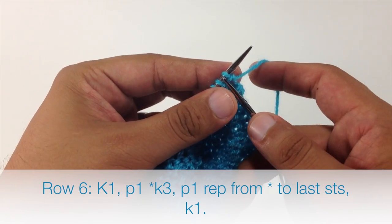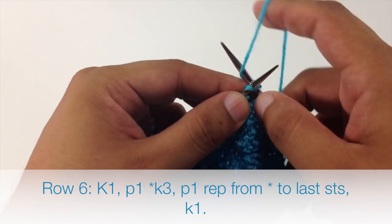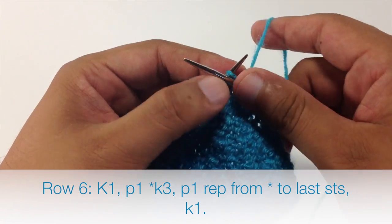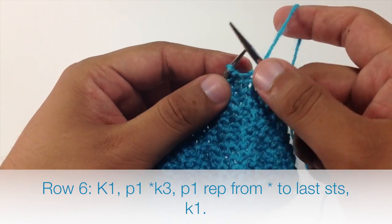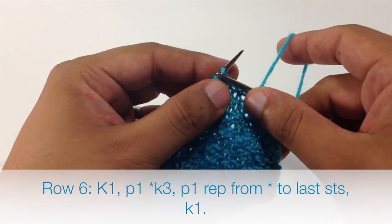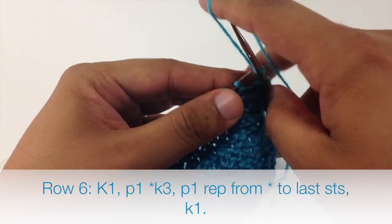Row 6. We are going to begin by knitting 1. Then we are going to purl 1. Then we will start our repeat by knitting 3, and we will finish our repeat by purling 1.